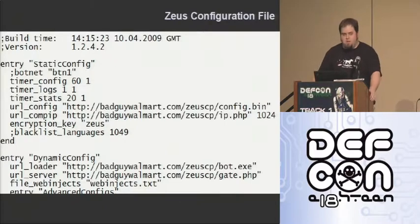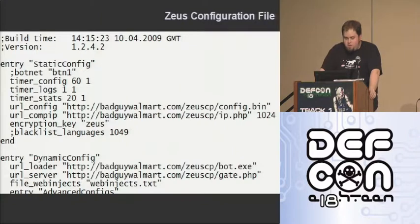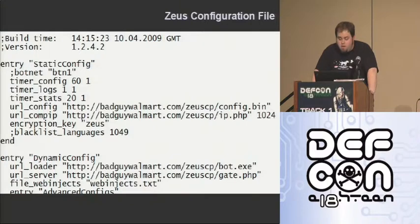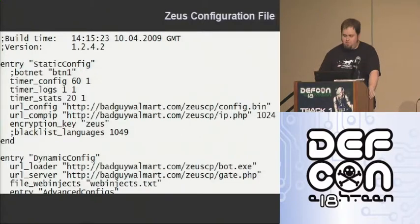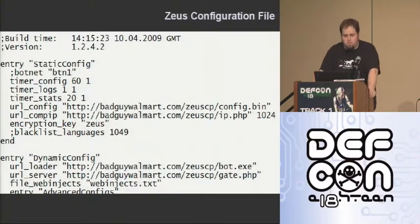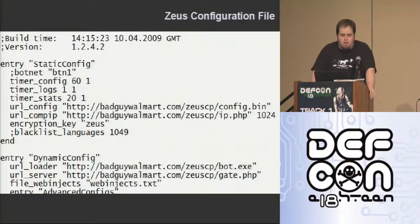The config.bin is a configuration file where the bot will go to update itself and get more information on what it's supposed to do. And gate.php is the actual command-and-control page where bots will check in and let the C2 server know they're alive, provide their information, and submit stolen data.